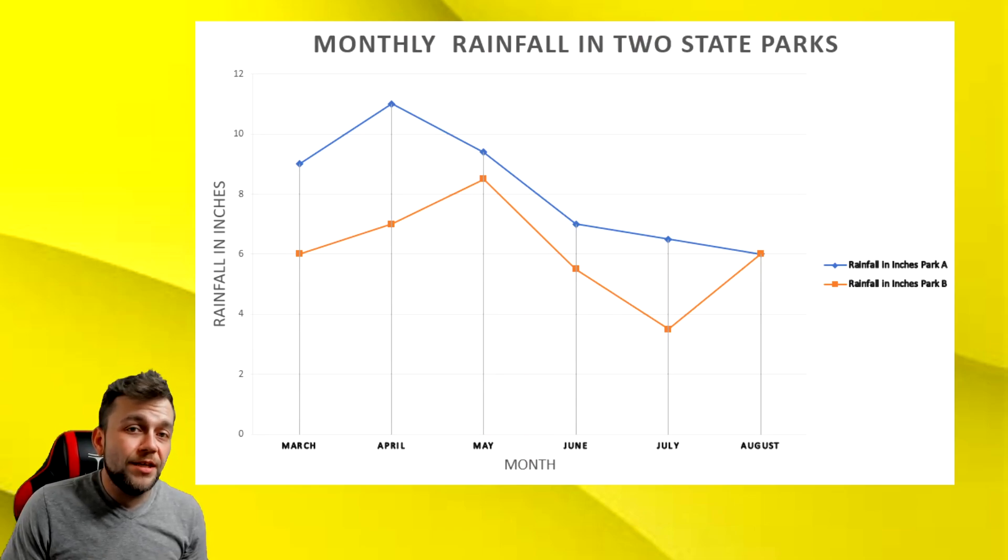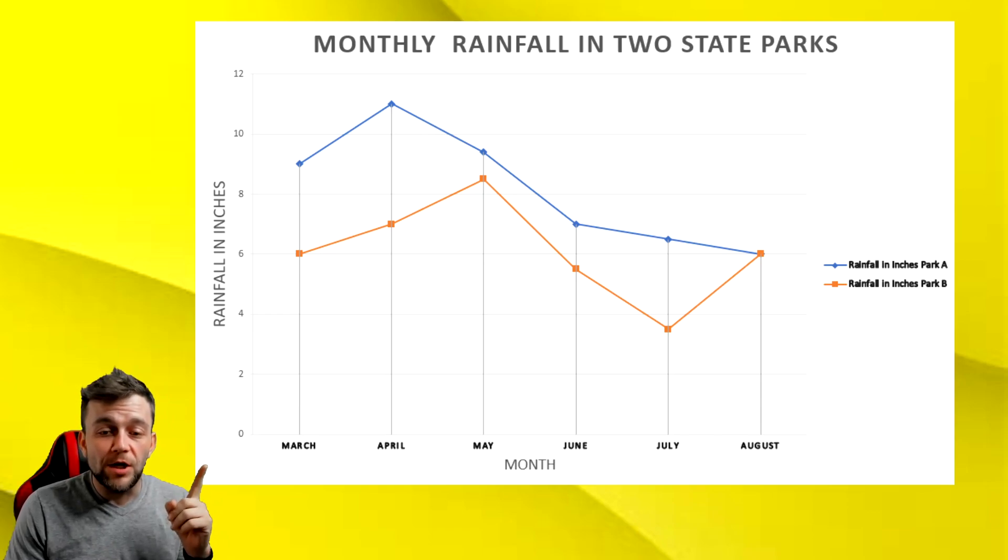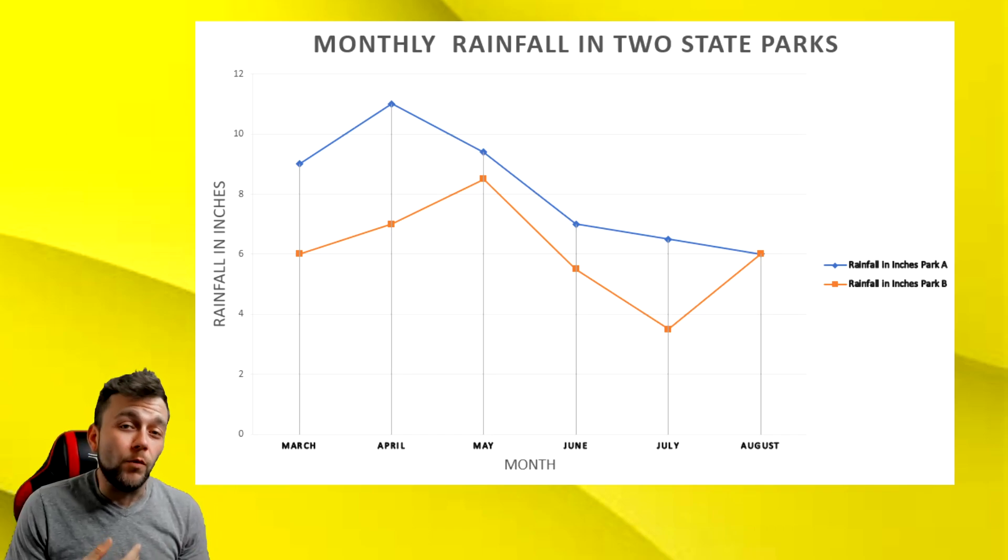Now we're moving on to the next type of graph, and this is what's called a line graph. Line graphs typically show a relationship between some data point and time. In this example, we have our dates or our months of the year. And up here, we have inches of rainfall. When we look at the title of this graph, it says monthly rainfall in two state parks.